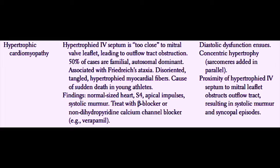The second most common cause of sudden death in young athletes is anomalous coronary artery takeoff from the aorta. These patients will often develop diastolic dysfunction, which involves defective relaxation of the heart. This is more of a concentric hypertrophy because sarcomeres are added in parallel to each other. Findings include a normal-sized heart but a fourth heart sound, as well as apical impulses and a systolic murmur. These patients should be treated with a beta blocker or a non-dihydropyridine calcium channel blocker, for example verapamil or diltiazem. Because of the hypertrophied interventricular septum, these patients may present with syncope and a systolic murmur.